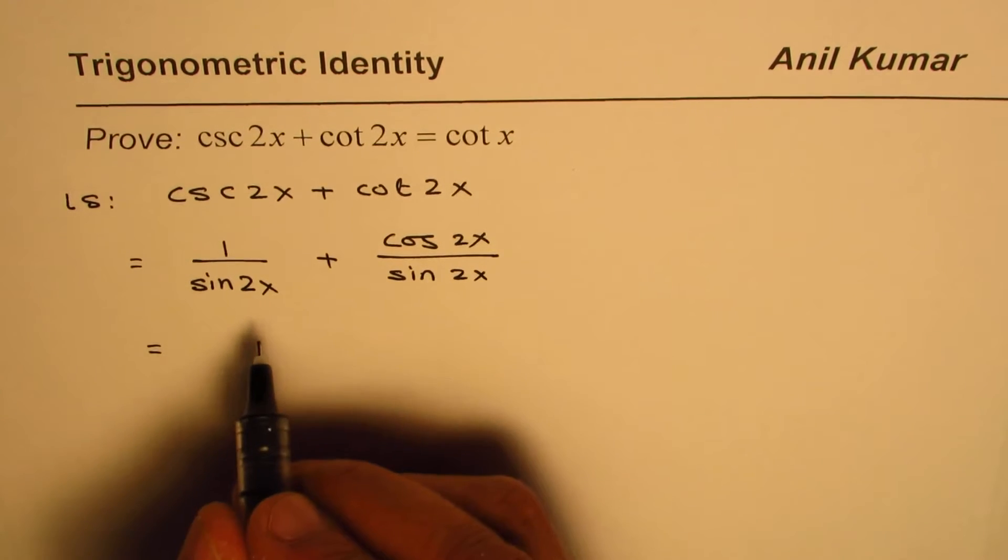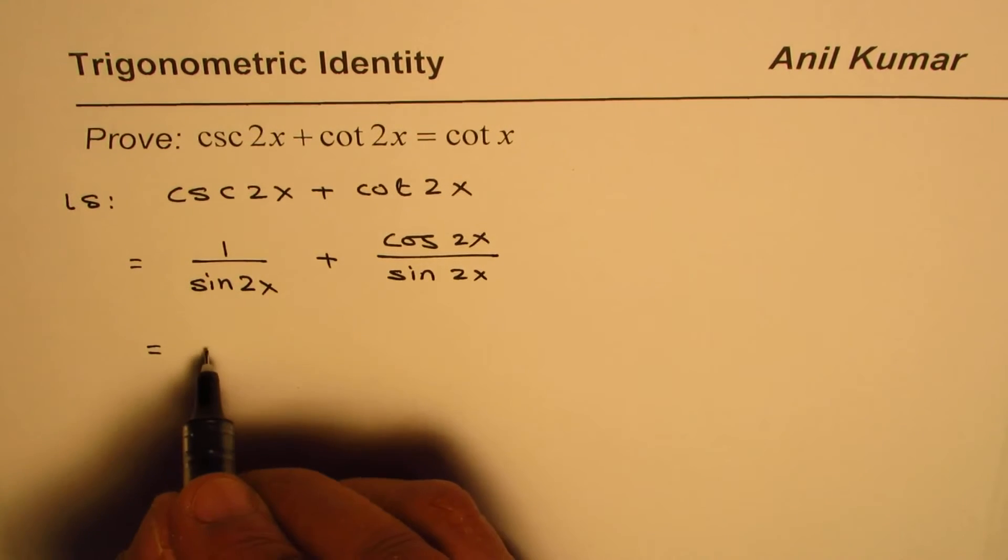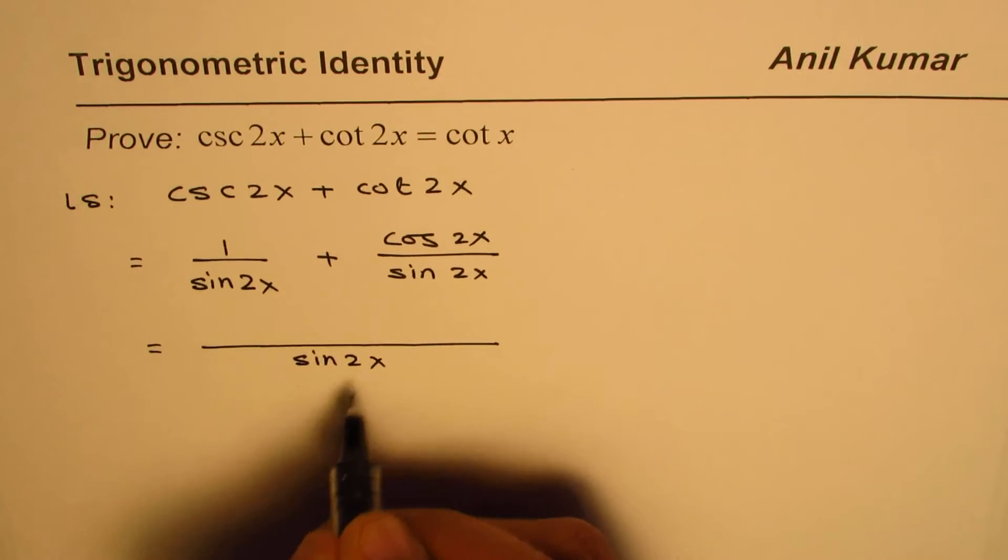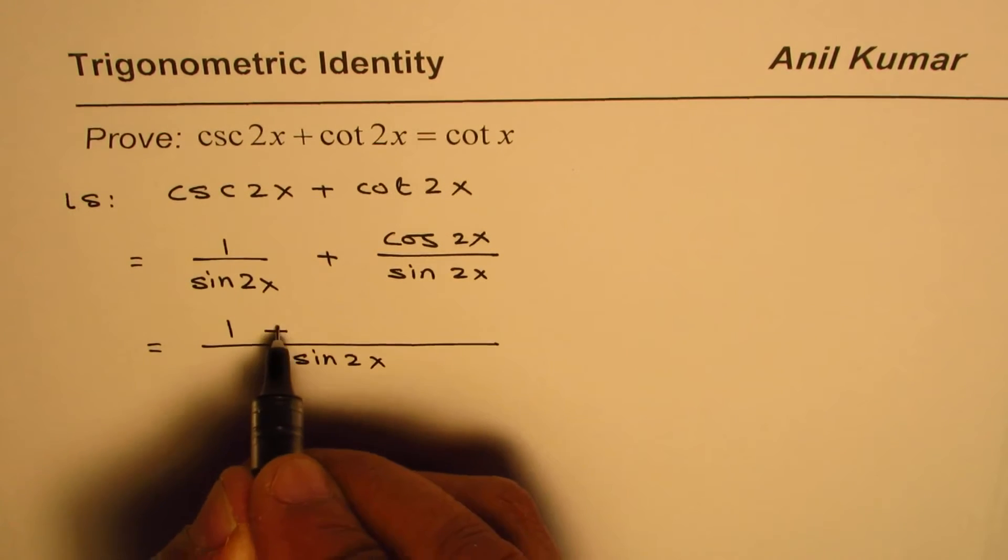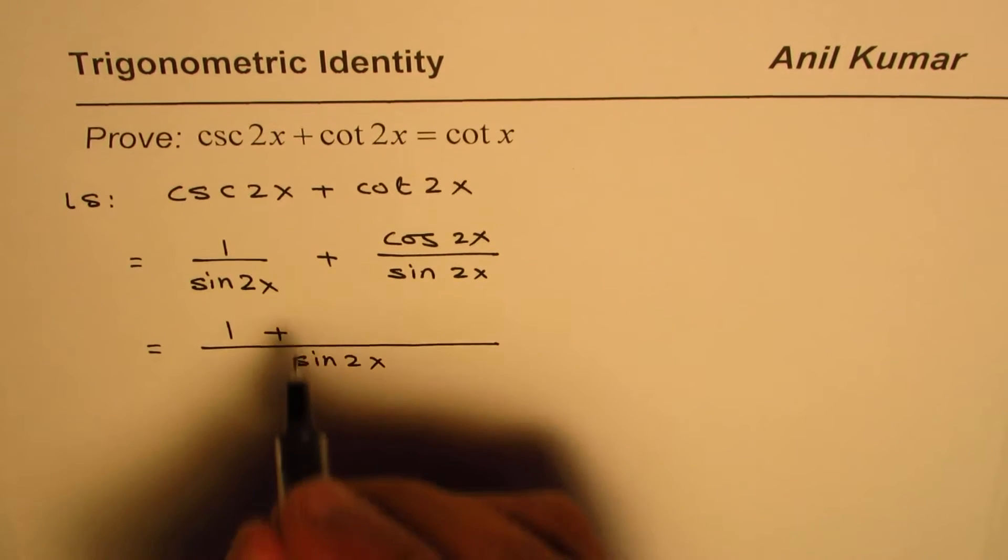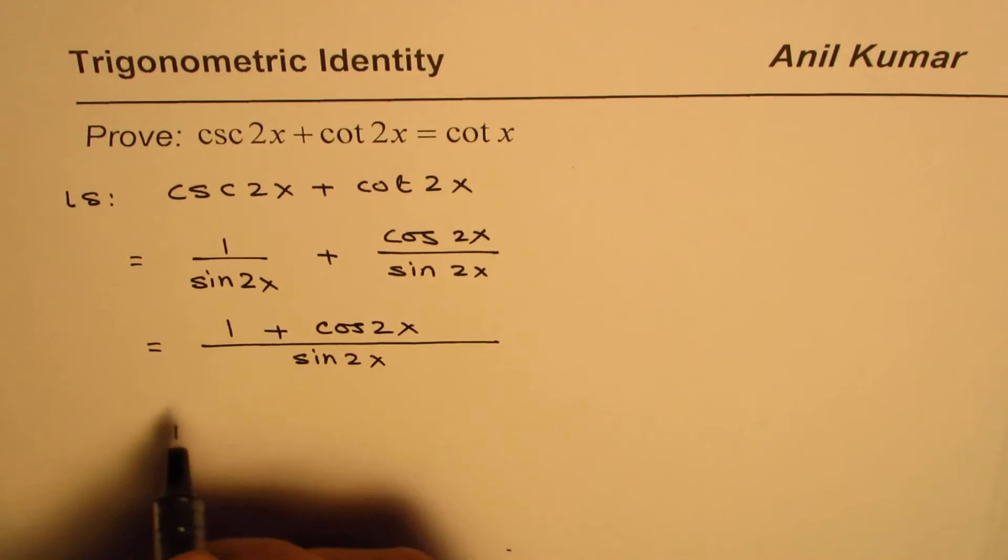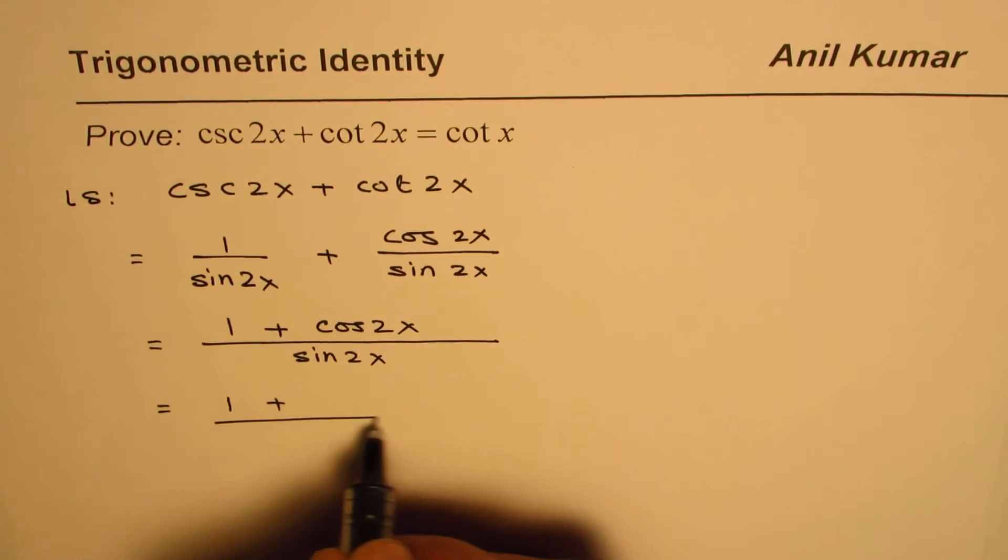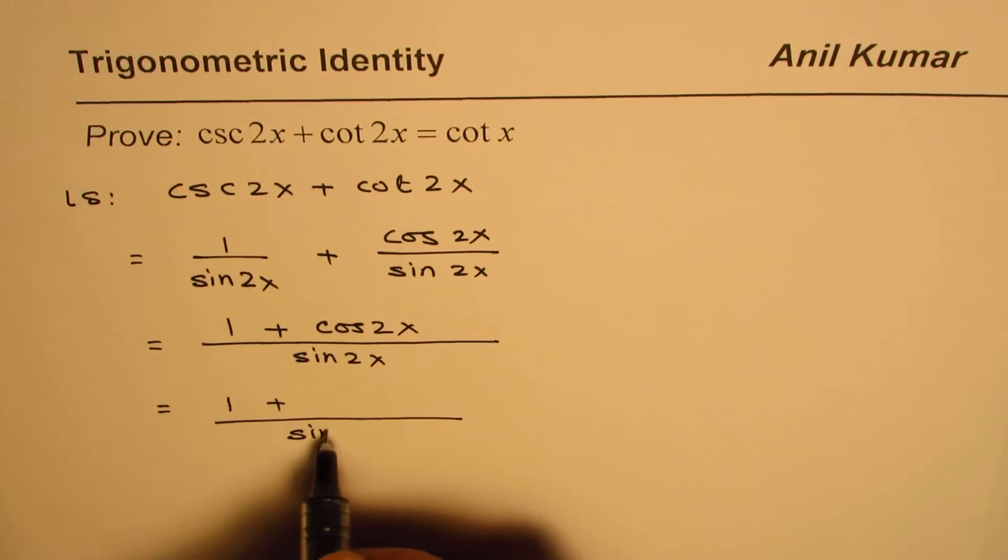Clearly what you see here is that sine 2x is a common denominator. We can write this as sine 2x and the numerator we have 1 plus cosine 2x. Let me rewrite cosine 2x now and then we'll expand cosine 2x. 1 plus what? And we have sine 2x here.